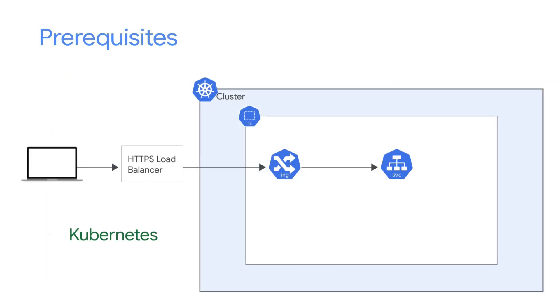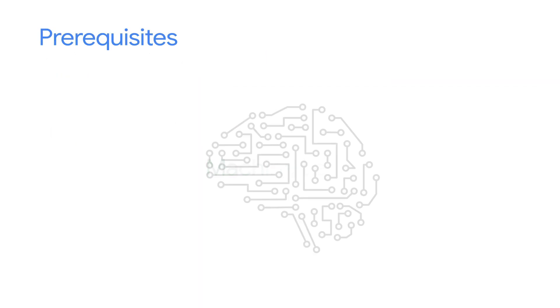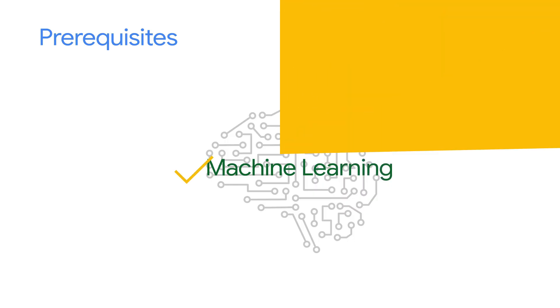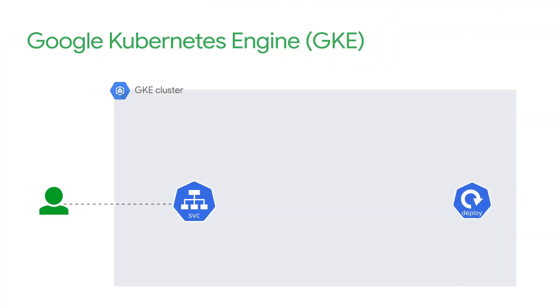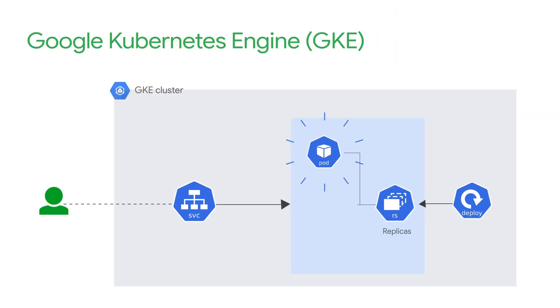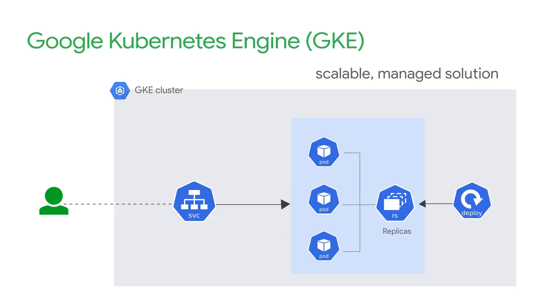Before we dive in, you should have a basic understanding of Kubernetes concepts and machine learning. GKE is a managed Kubernetes service that makes it easy to deploy, manage, and scale your AI/ML workloads in the cloud without needing to be a Kubernetes expert.